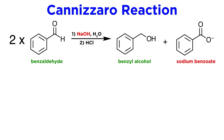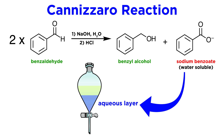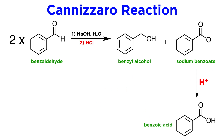Given that the reaction occurs under strongly basic conditions, the product is actually sodium benzoate, which is water-soluble, and therefore benzyl alcohol, which is neutral, can be separated by extraction into ether. Dilute hydrochloric acid is then used to protonate the benzoate to give benzoic acid.